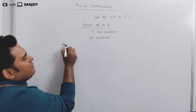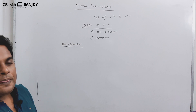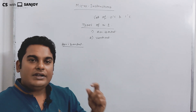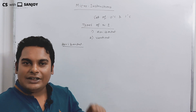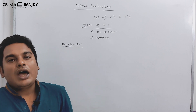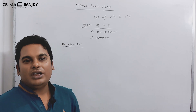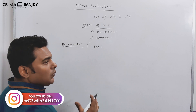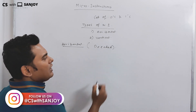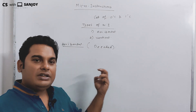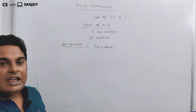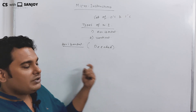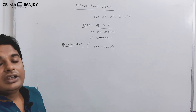Horizontal micro-instruction is already decoded — it is already in decoded format. The horizontal micro-instruction has binary bits. Every bit is a control bit and directly controls the control unit and generates the necessary control signal. So it is in decoded format.